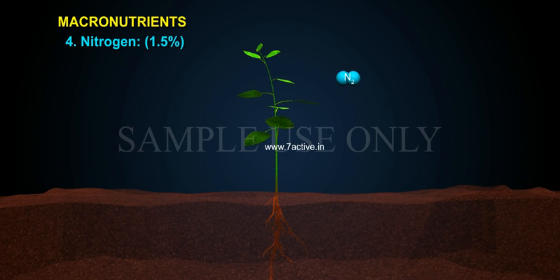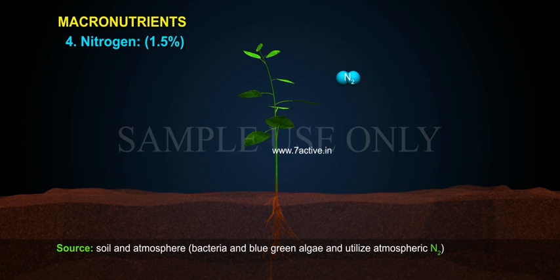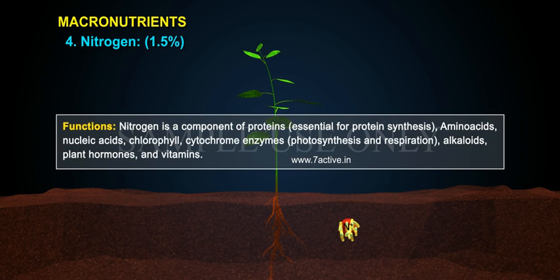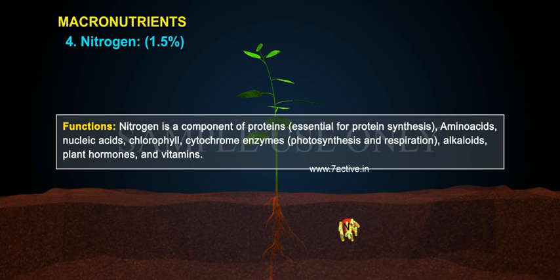Nitrogen (1.5%): Source — soil and atmosphere; bacteria and blue-green algae utilize atmospheric N2. Obtained as nitrates and ammonium salts. Functions: Nitrogen is a component of proteins and is essential for protein synthesis, amino acids, nucleic acids, chlorophyll, cytochrome, enzymes, photosynthesis and respiration, alkaloids, plant hormones, and vitamins.